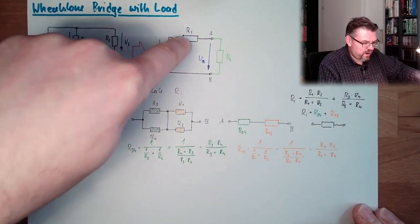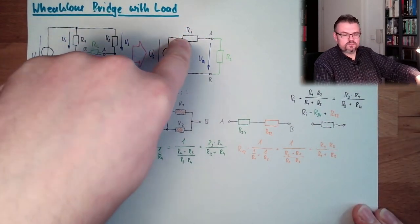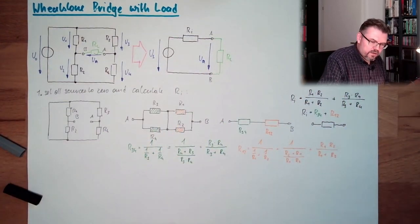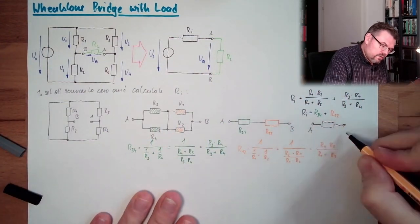Alright, so this is our Ri. This is what we calculated according to the plan.